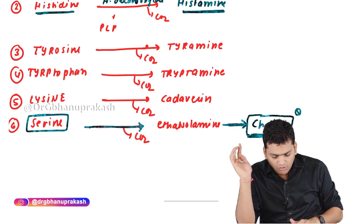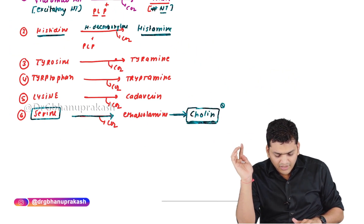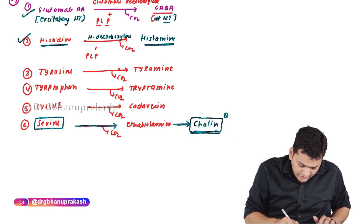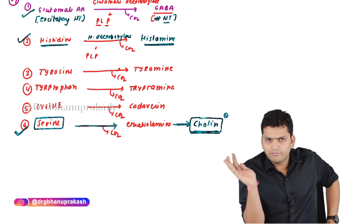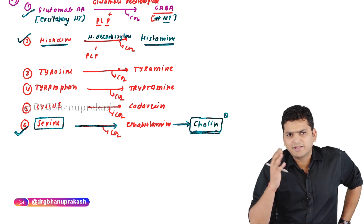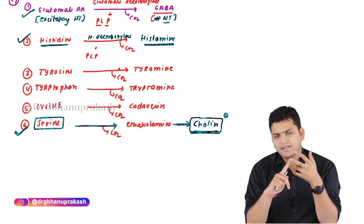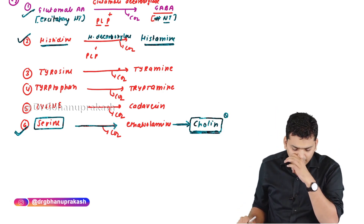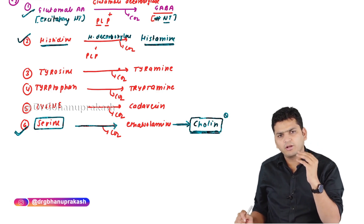These are the examples of the decarboxylation reaction. The important ones are: glutamate converts into GABA (excitatory converting to inhibitory), histidine to histamine, and serine converts into ethanolamine which further converts into choline. These are the examples of decarboxylation of amino acids — the first reaction in biochemistry.